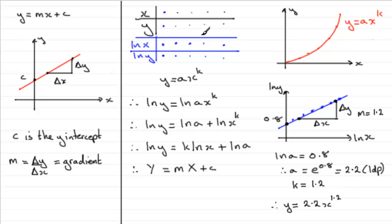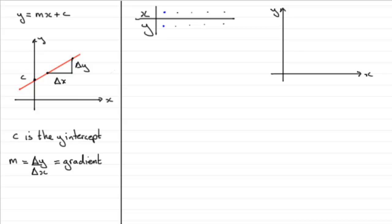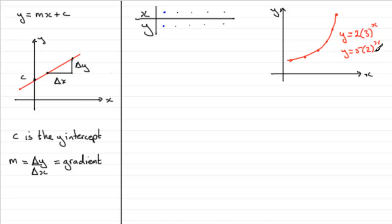I've used this concept for equations of the form y equals ax to the k, but there are other forms. Suppose this time you had a table of values and when you plotted them, you had a series of points that looked like an exponential type graph — something of the form y equals 2 times 3 to the power x, or y equals 5 times 2 to the power x. In other words, something of the form y equals a times b to the power x, where a and b are constants to be found.